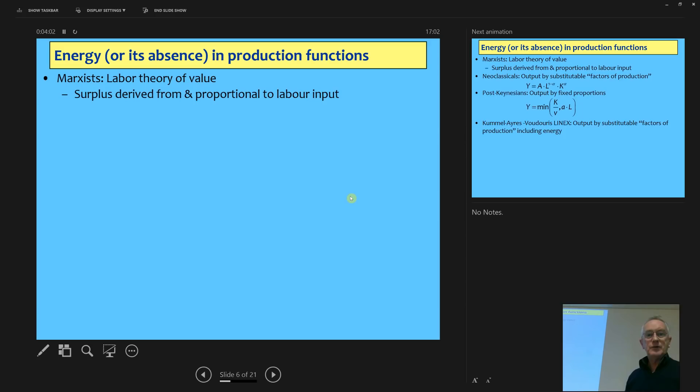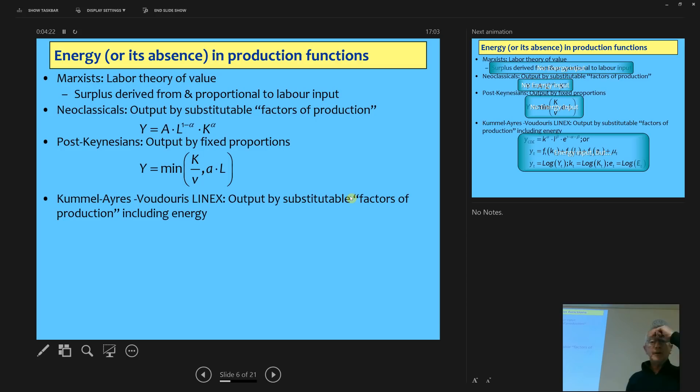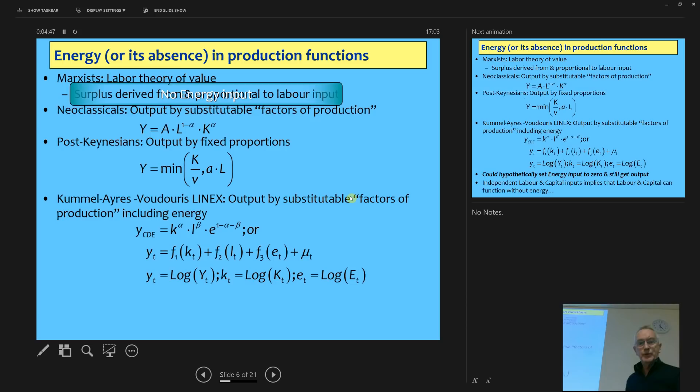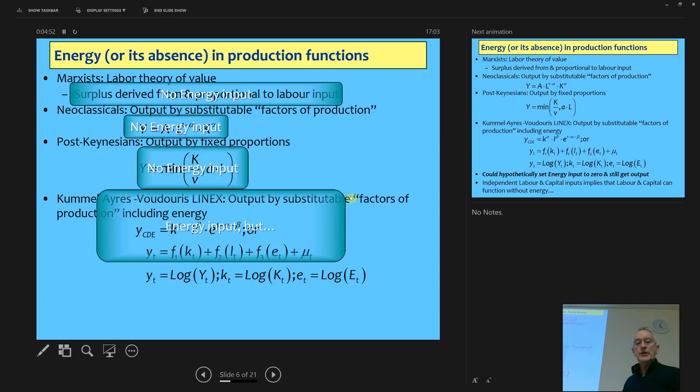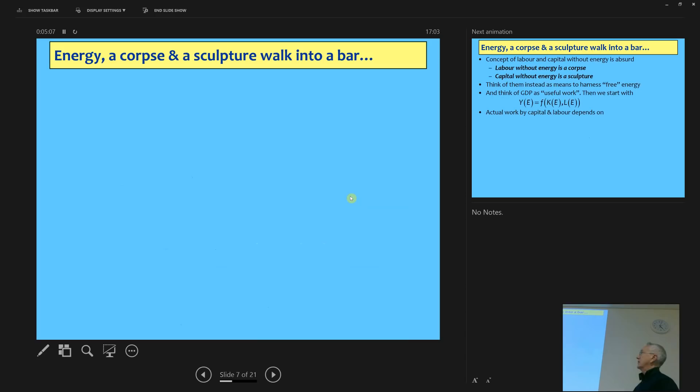The post-Keynesians, on the other hand, in reactions to the neoclassicals, work in terms of they reject the idea of smoothly substitutable factors of production, but they also have no explicit role for energy. And even if you look at the ecological economists, there's still no proper equation that essentially includes energy as part of production. So the Marxists, the labour theory of value, you've got them saying surplus derives from and is proportional to the labour input. Neoclassical is saying you've got output by smoothly substitutable factors of production, using the Cobb-Douglas production form there. The post-Keynesians using output by fixed proportions, and clearly that applies to my work as much as anybody else's. There have been some attempts, and the most sophisticated is by Kummel and Ayres and Warr, who, by the way, Danil's PhD supervisor, talking about output including energy inside.